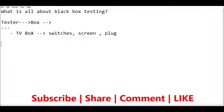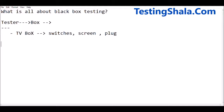As a black box tester, how is the tester going to test this TV box? Basically the tester need not know all the ingredients which make up this TV. Inside there could be circuit boards, diodes, resistors — it can have many items within the TV. But as a black box tester, you do not need to know all the things which are inside the TV box.